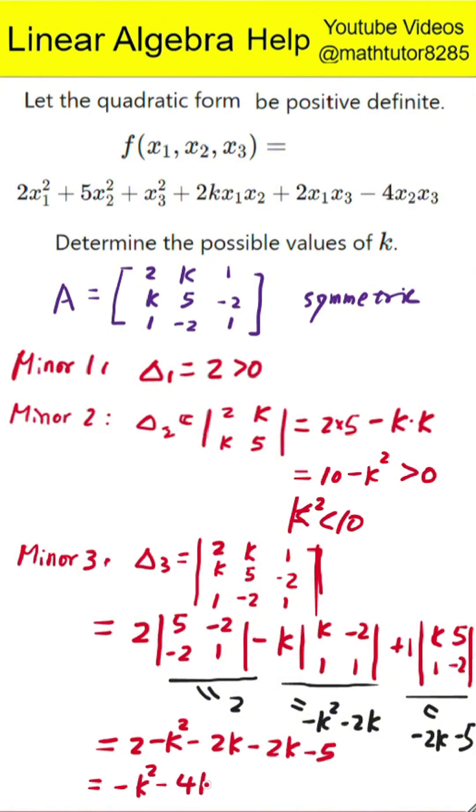Simplifying step by step. 2 times open parenthesis 5 minus 4 close parenthesis gives 2. Minus k times open parenthesis k plus 2 close parenthesis gives negative k squared minus 2k. Plus 1 times open parenthesis negative 2k minus 5 close parenthesis, which simplifies to negative k squared minus 4k minus 3.